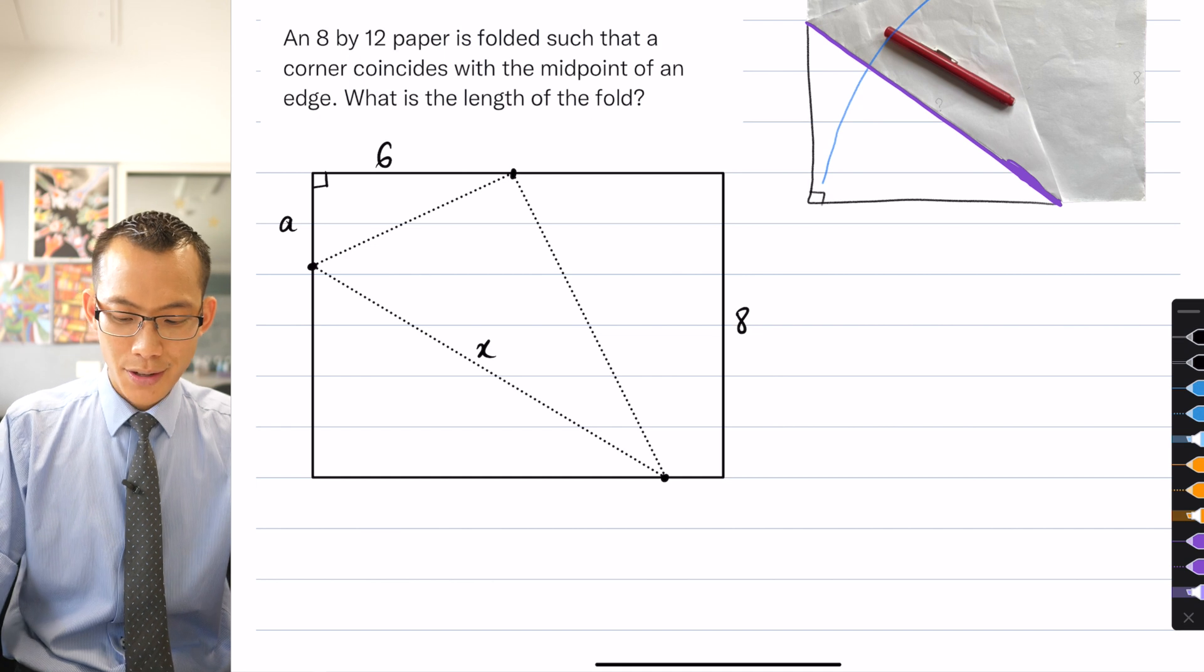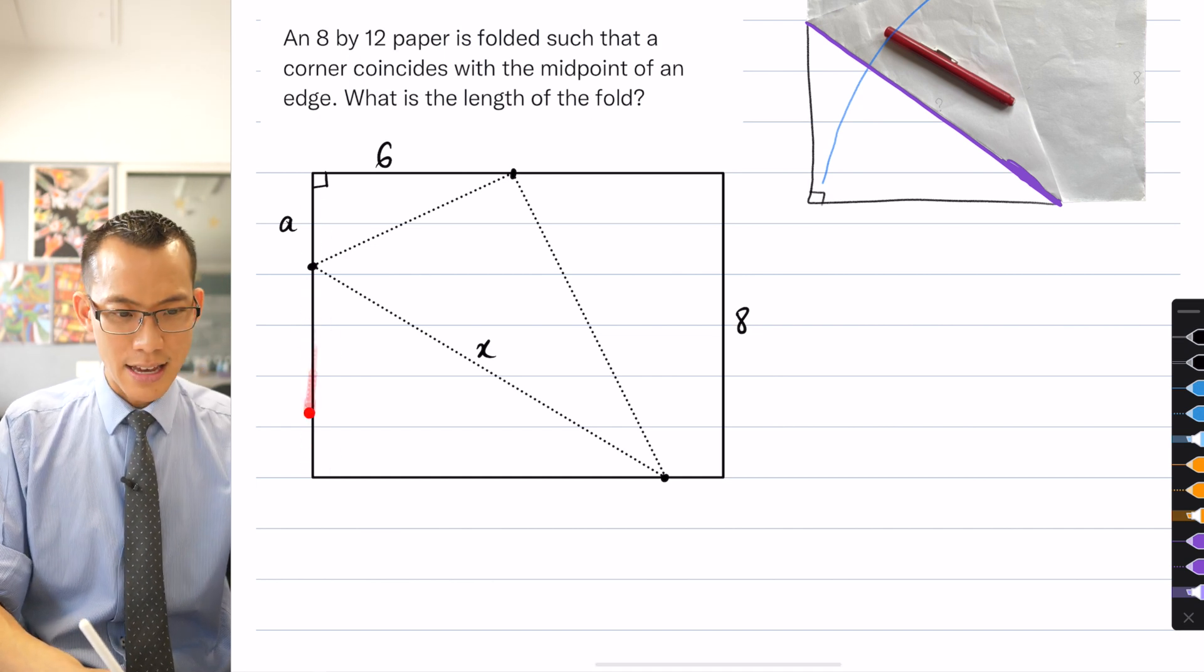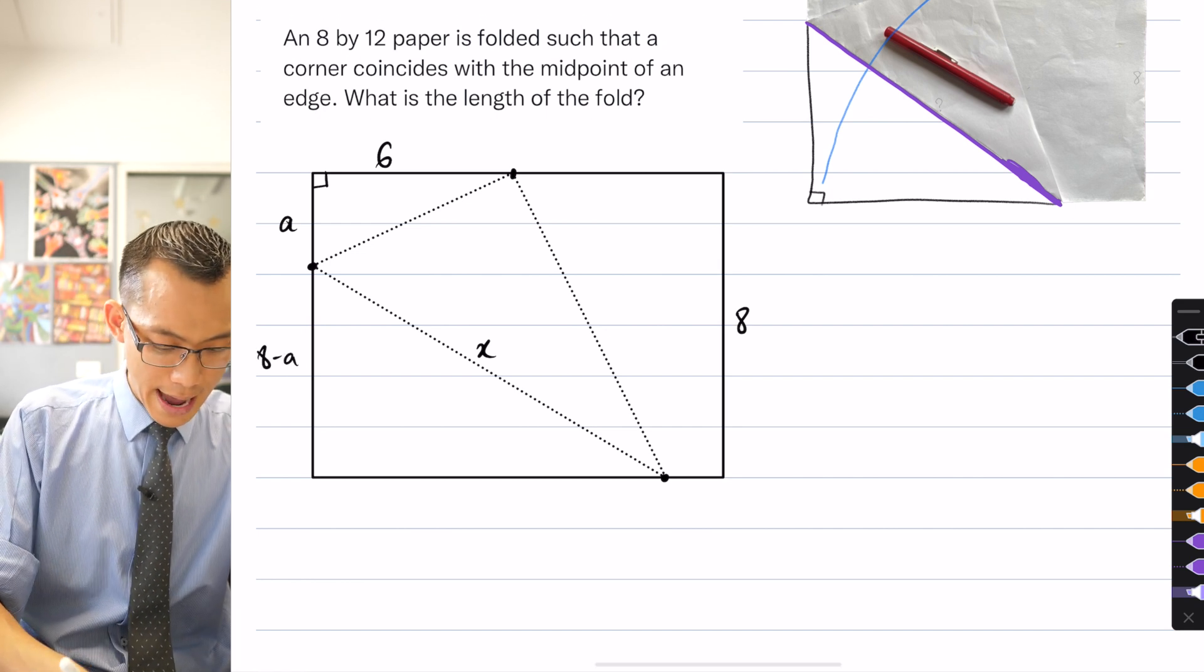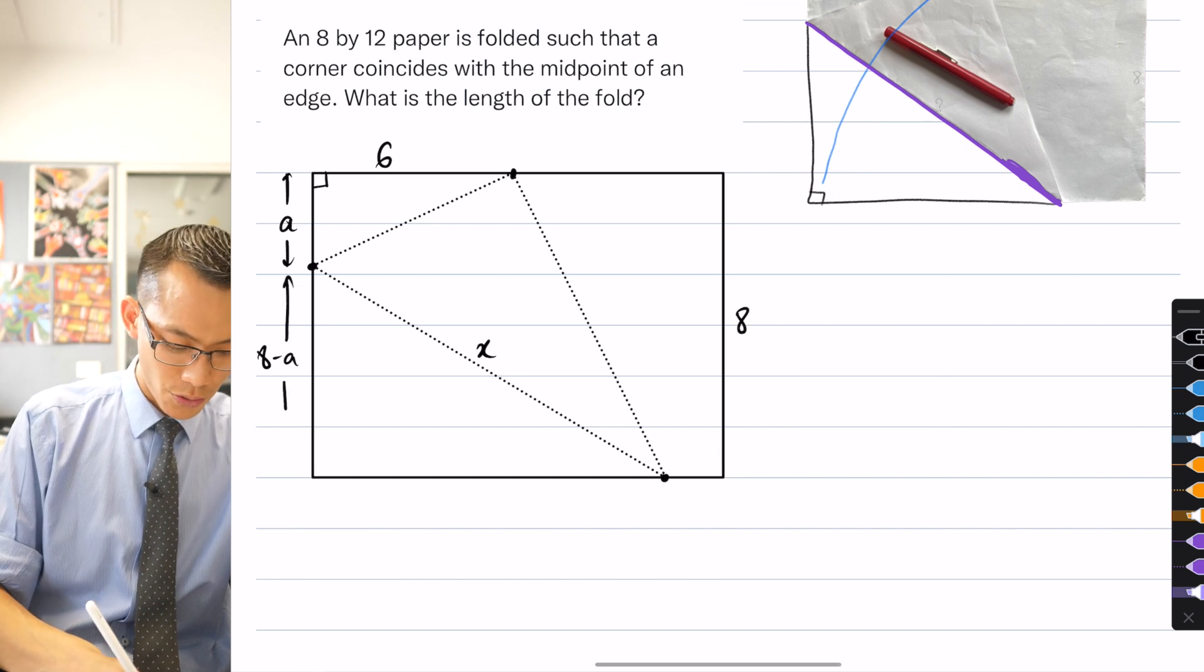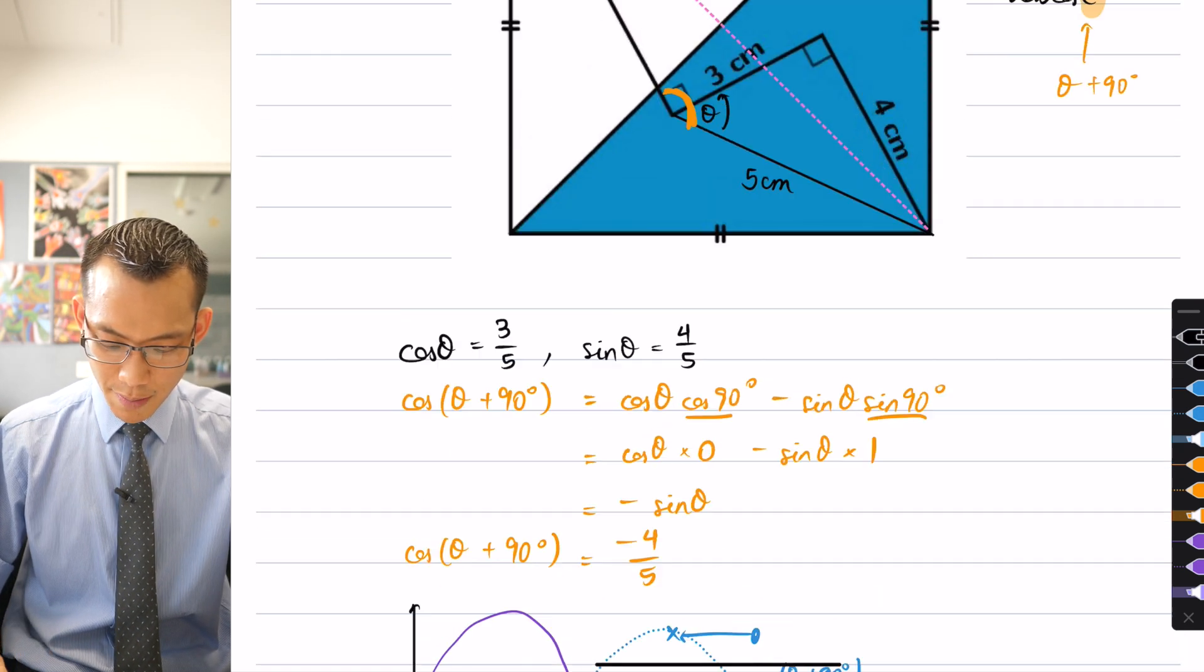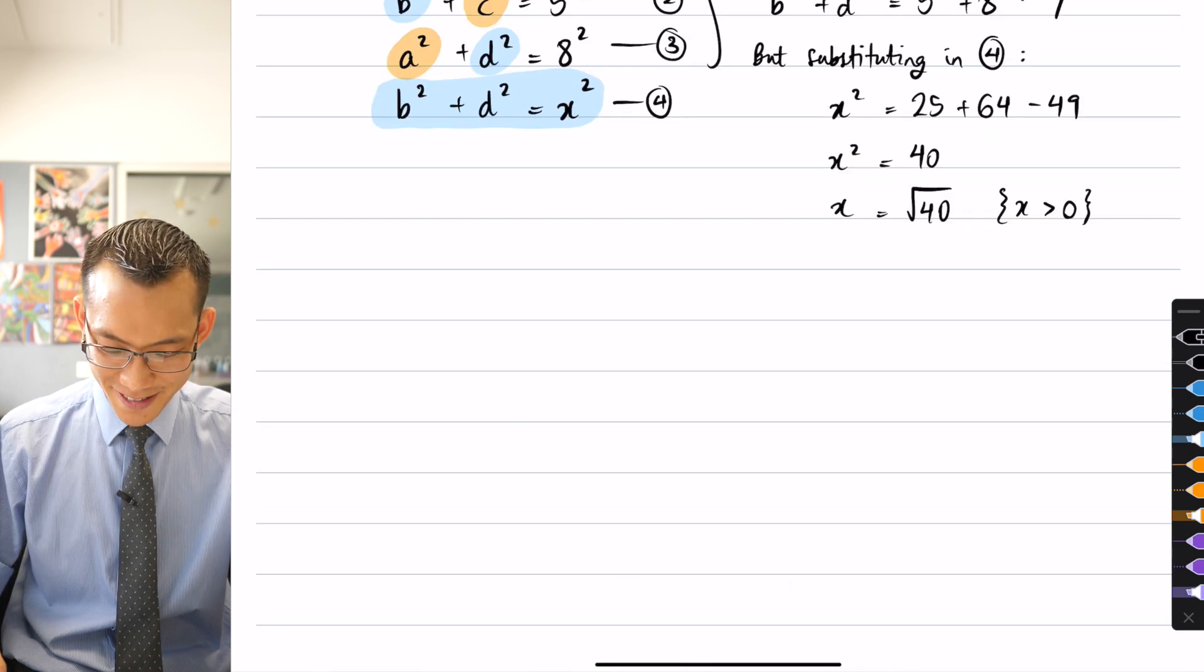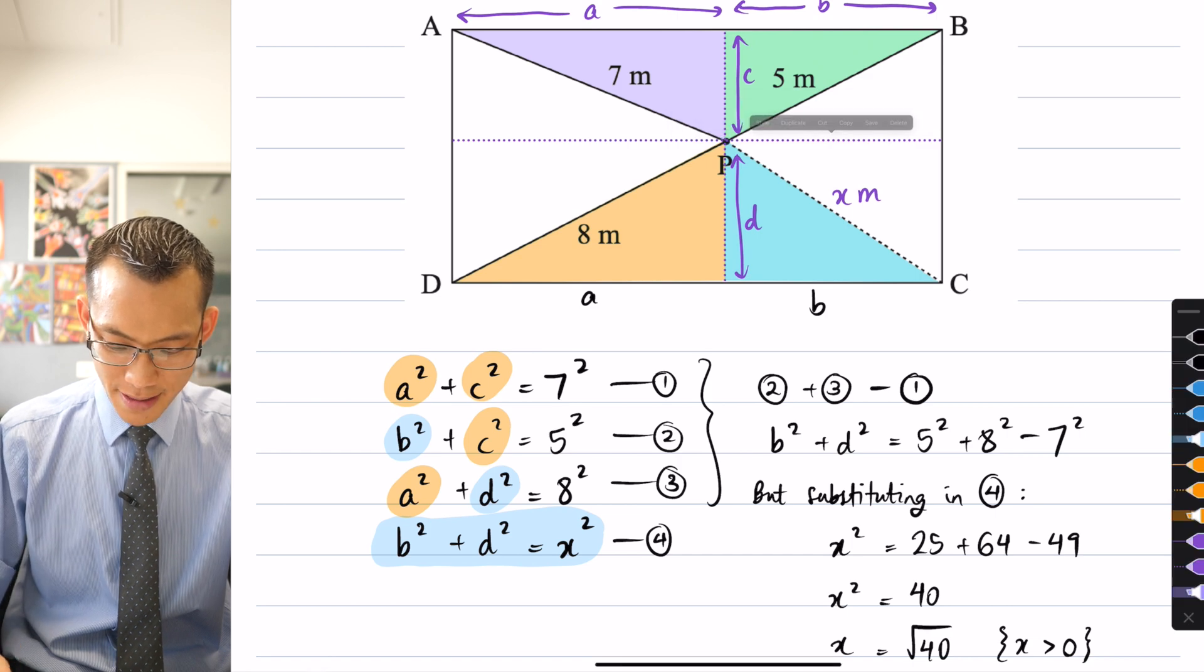And that means because this whole vertical length here is 8, then this lower length here is going to be the difference. So this is going to be 8 take away a. So this goes this far, and then this one goes this far. So far so good. Now, what this tells me is if I have a look, and I'm going to cheat and grab that triangle that I drew before because I'm lazy.